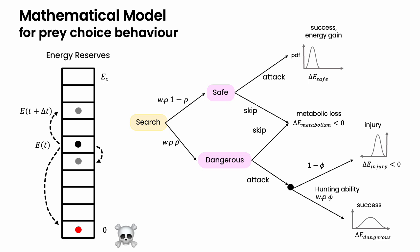If the energy falls to 0, then the predator dies. If its energy reaches the maximum, then it can reproduce.